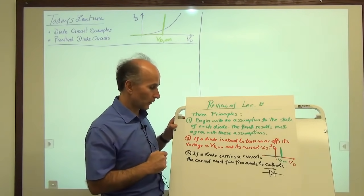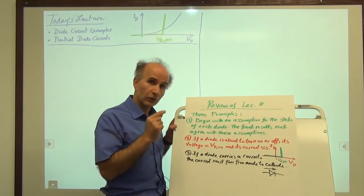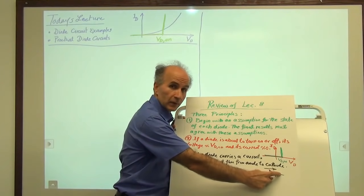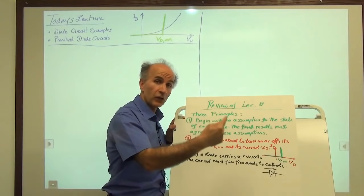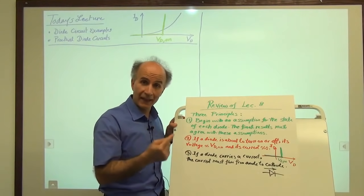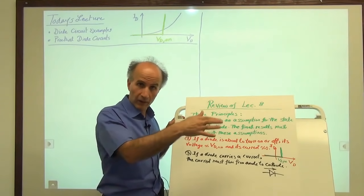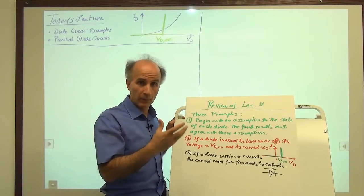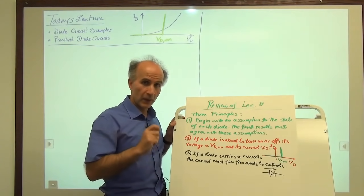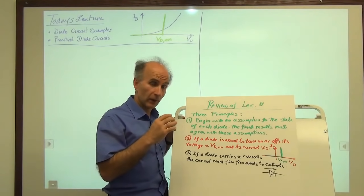The third point was that if a diode does carry a current, that current is allowed to flow only from the anode to the cathode. So if our analysis eventually gives us a current flowing in the wrong direction, that is incorrect and results from an incorrect assumption at the beginning, or maybe a mistake somewhere in our analysis. That current cannot happen. So long as we remember these three principles, we can perform analysis systematically and correctly.